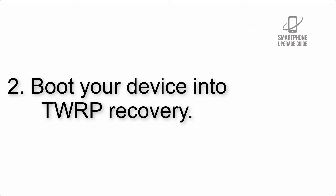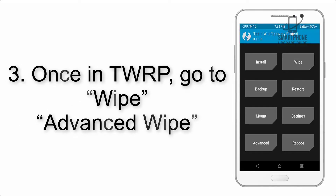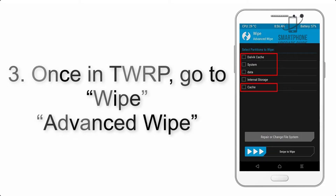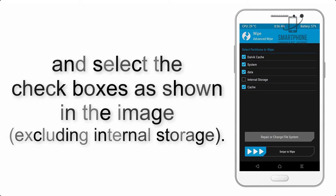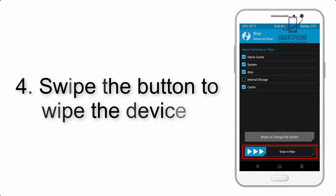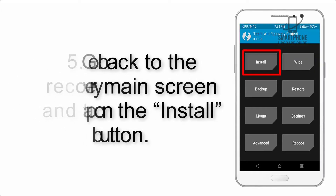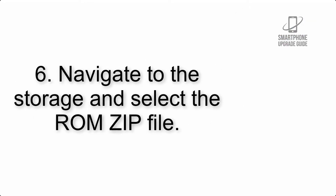Step 2: Boot your device into TWRP recovery. Once in TWRP, click on Wipe, then Advanced Wipe, and select the checkboxes as shown in the image, excluding internal storage. Step 4: Swipe the button to wipe the device. Step 5: Go back to the recovery main screen and tap on the Install button.